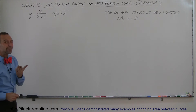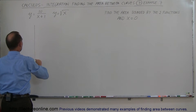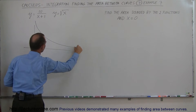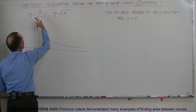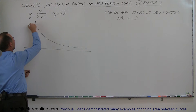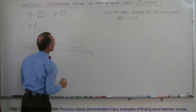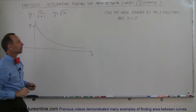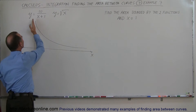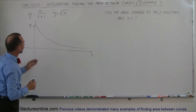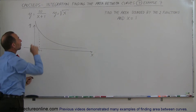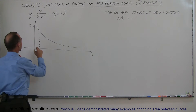Here are the two functions — let's graph them to see what they look like. The first function looks like a 1-over-x type function. The 10 in the numerator simply means it's going to rise up a little bit higher away from the x-axis. I'm going to make my limit at x equals 1 because this function asymptotically reaches up to the y-axis. And then the second function is y equals the square root of x.